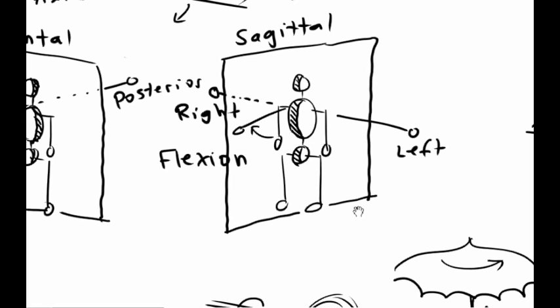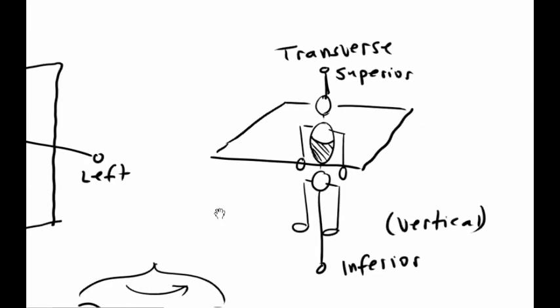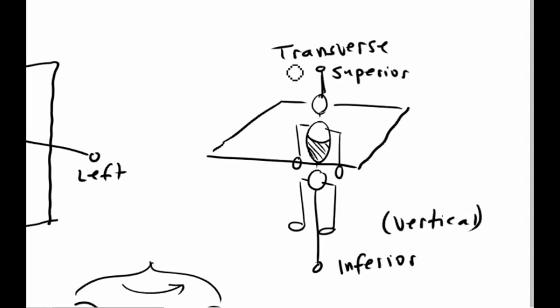And we can talk about rotation. Rotation movements typically occur in the transverse plane. So, for example, if you turn your head, that is movement around the body axis. You can describe that as a two-dimensional arc or circle that occurs within the transverse plane.